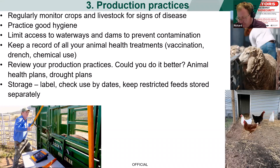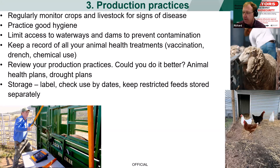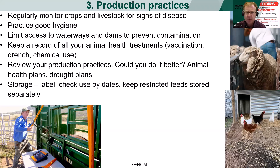The next step after people, visitors, and equipment is production practices. Production practices are equally important — we need to know that what we do day-to-day on the farm, even if it's only the school farm, complies with legislation, animal welfare, and best practice. The first item is regularly monitoring crops and livestock for signs of disease. Most people will do this — they'll check stock daily, and if you've got crops or horticulture they'll go out and have a look at paddocks. Practise good hygiene: make sure hands are clean, footwear is clean, stockyards are clean, excess manure is cleaned up and removed, and driveways are clear of manure as much as possible.